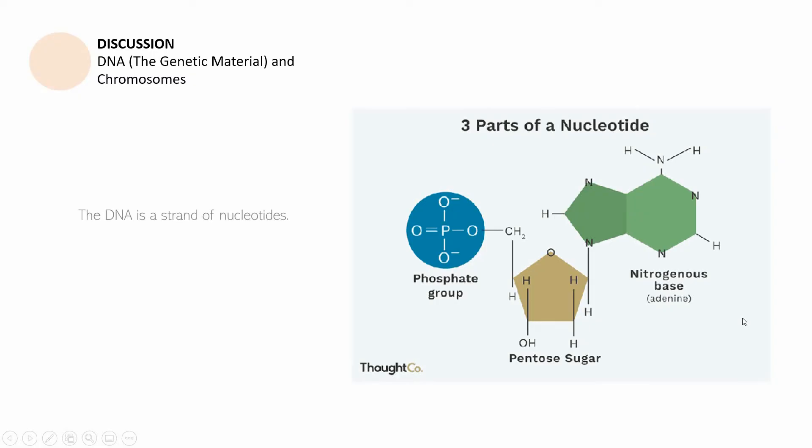The DNA, as you know now, has the following parts. The DNA is a strand of nucleotides, and a nucleotide is comprised of the following: a phosphate group, a pentose sugar, and nitrogenous base. A pentose sugar of a DNA is called the deoxyribose. The pentose sugar of an RNA is called a ribose.